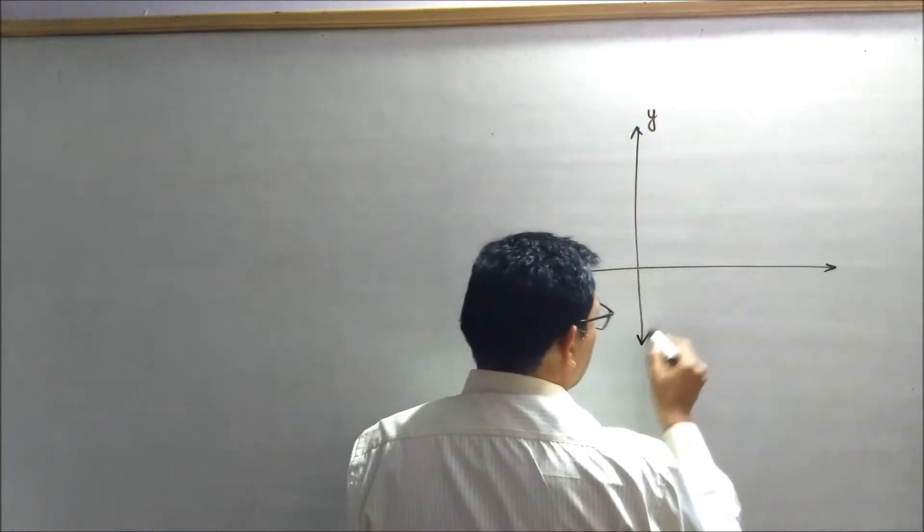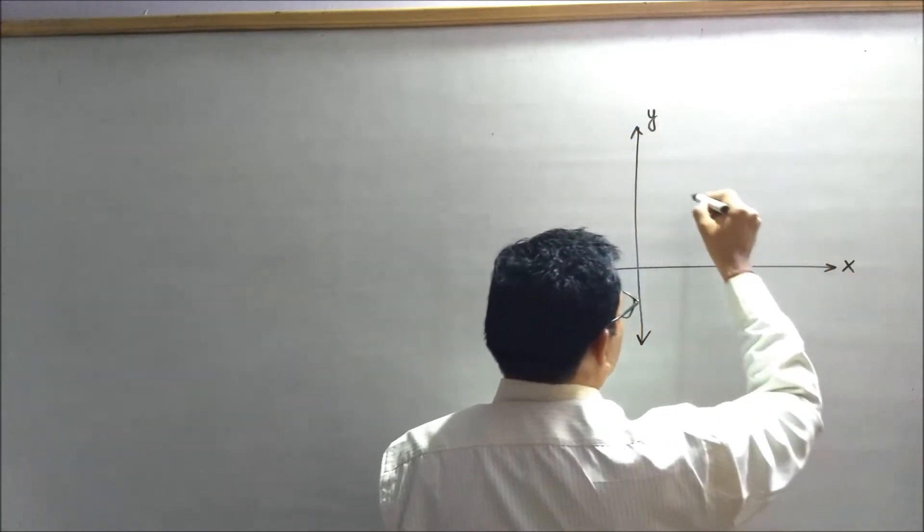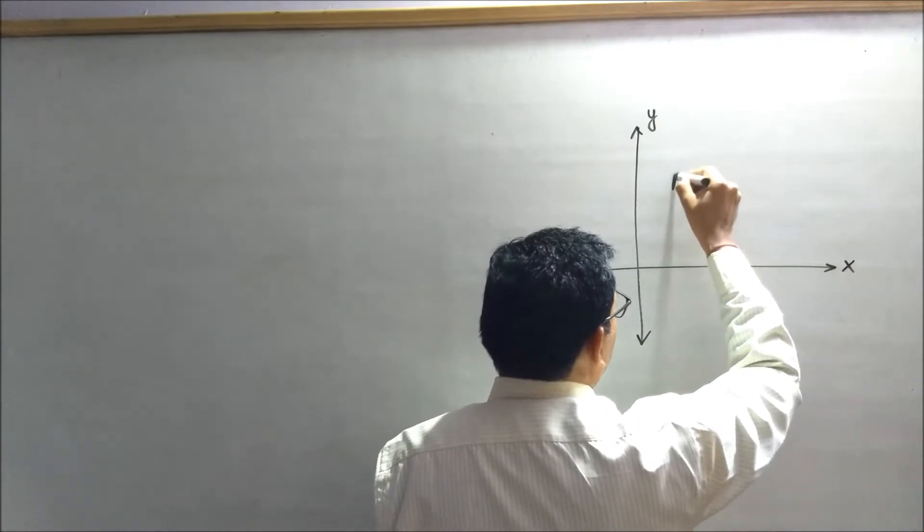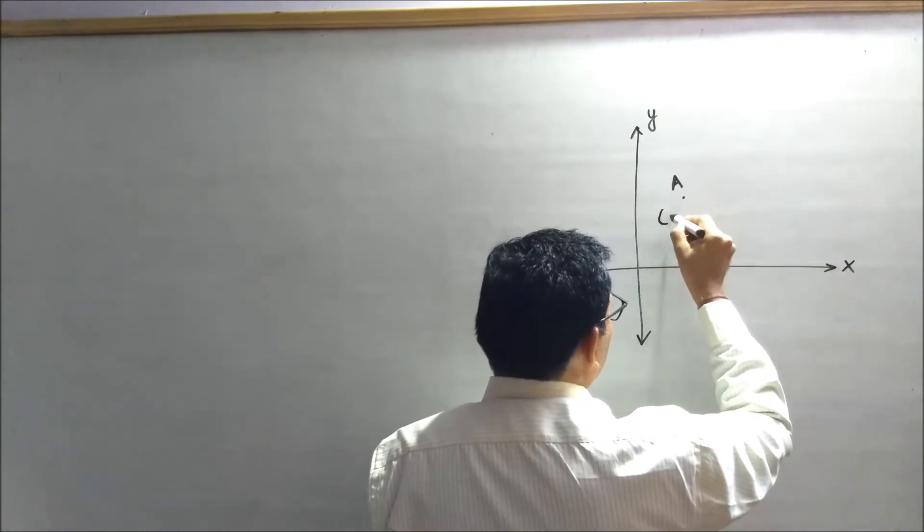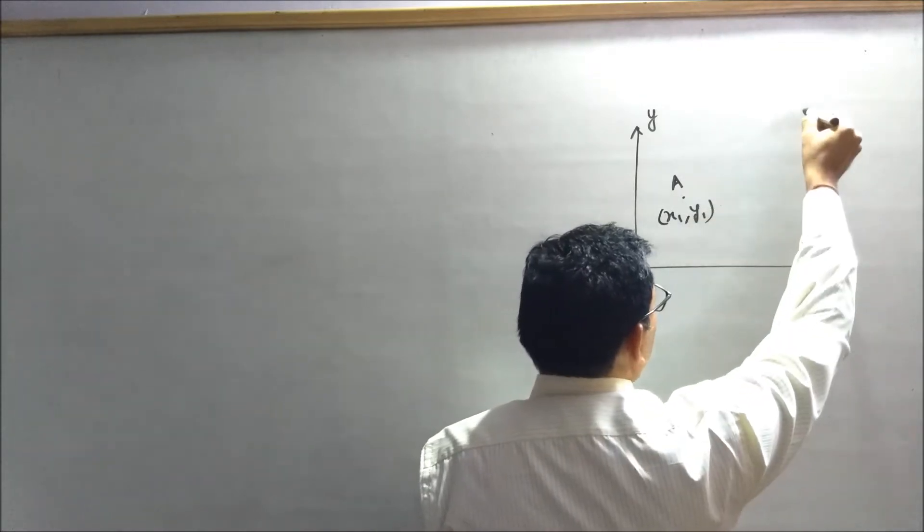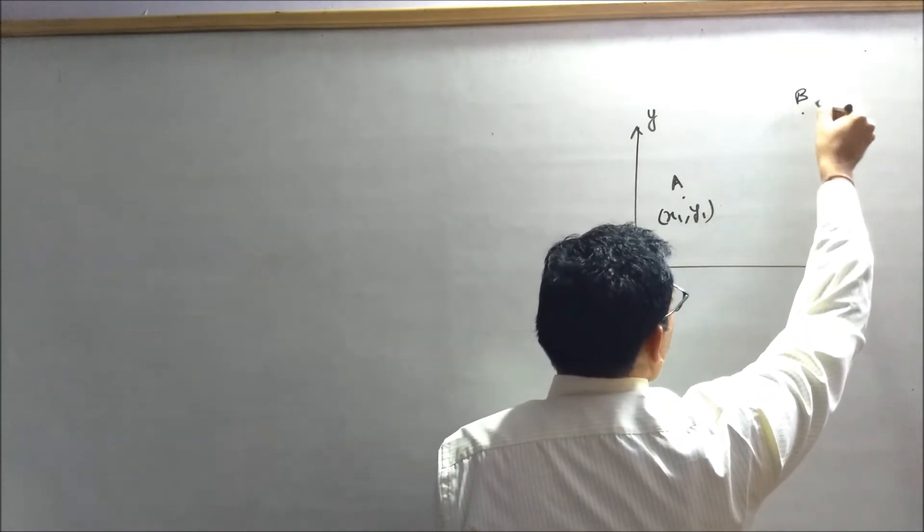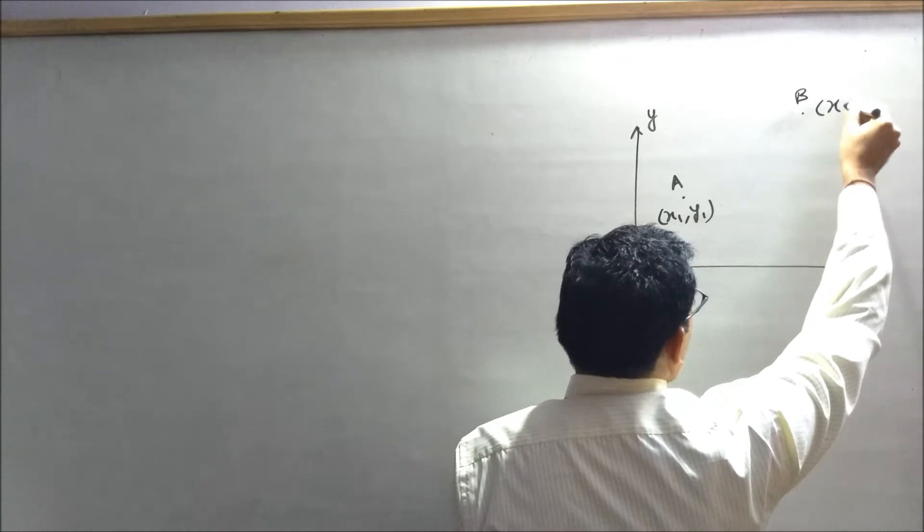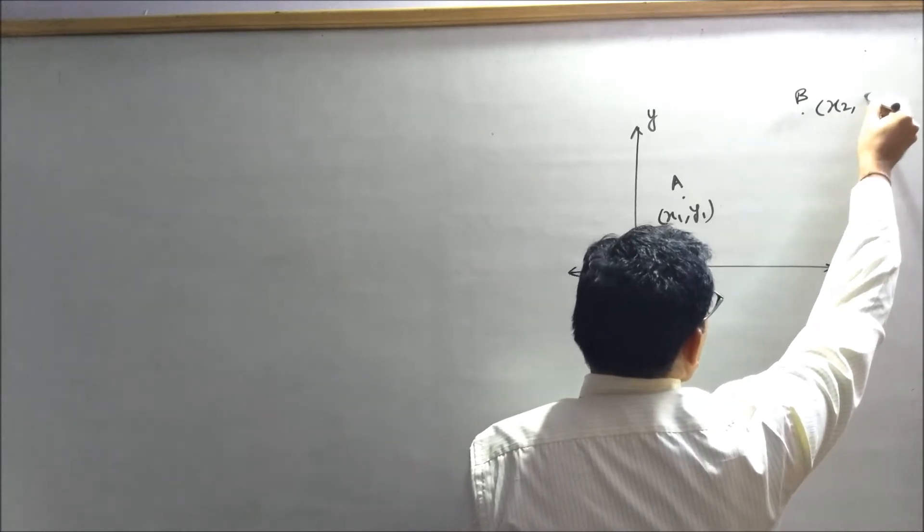Let's say this is our y-axis and this is our x-axis. And let's say this point is A and the coordinate of this point is x1, y1. And this is another point B. Let's say the coordinate of point B is x2, y2.